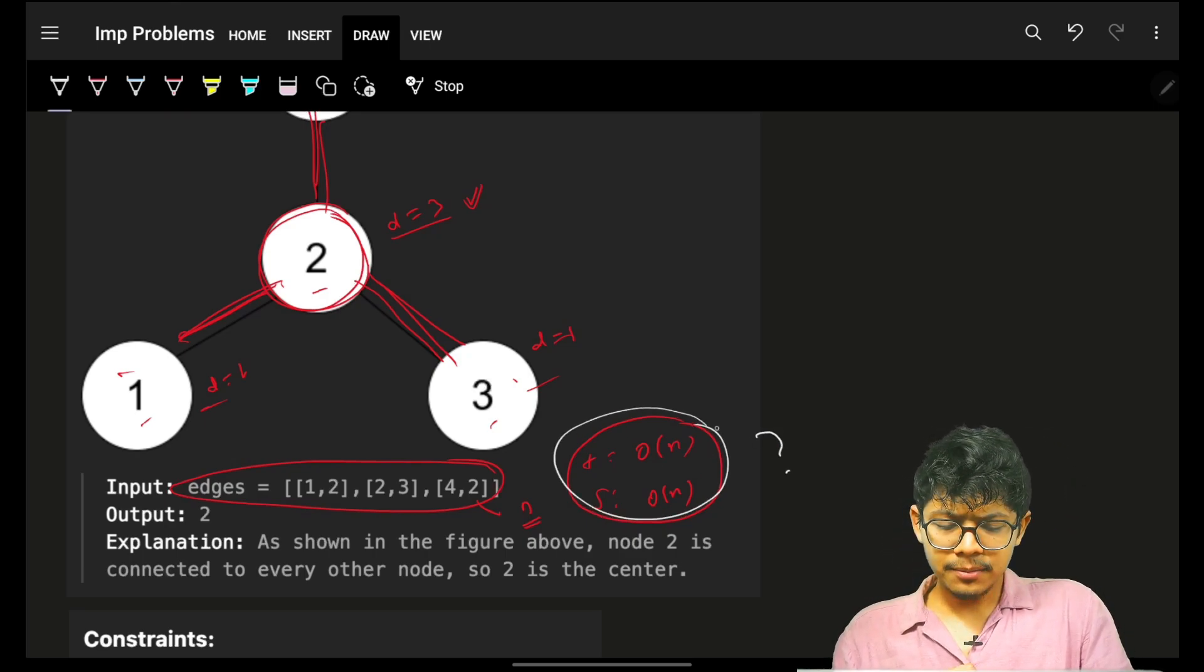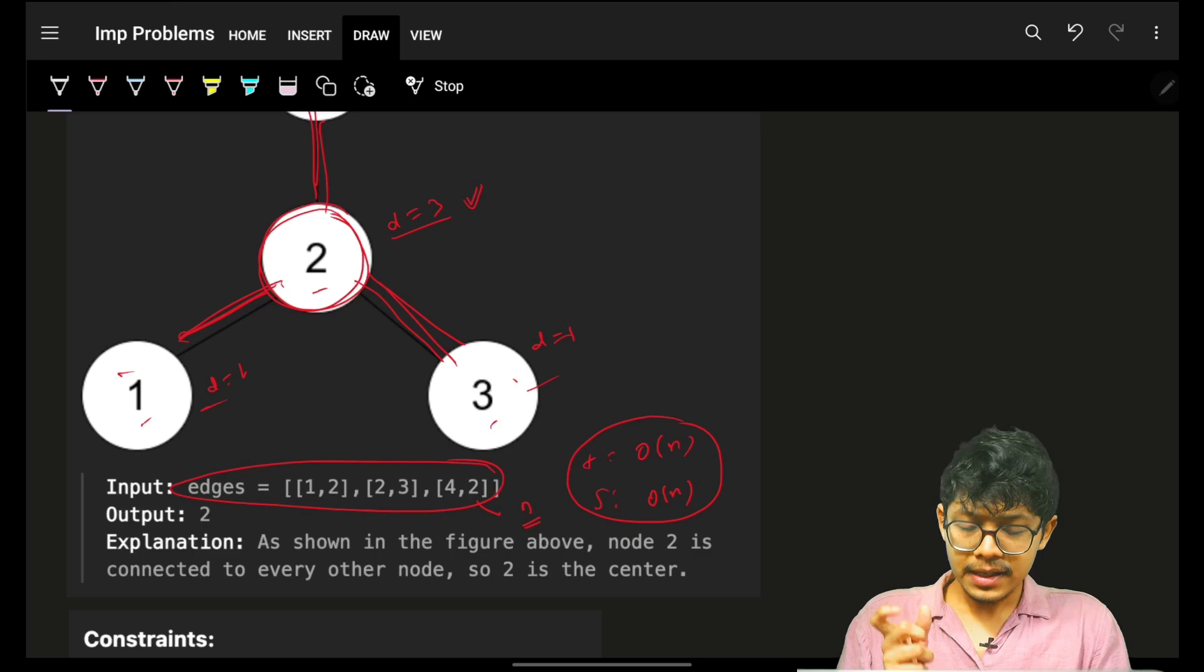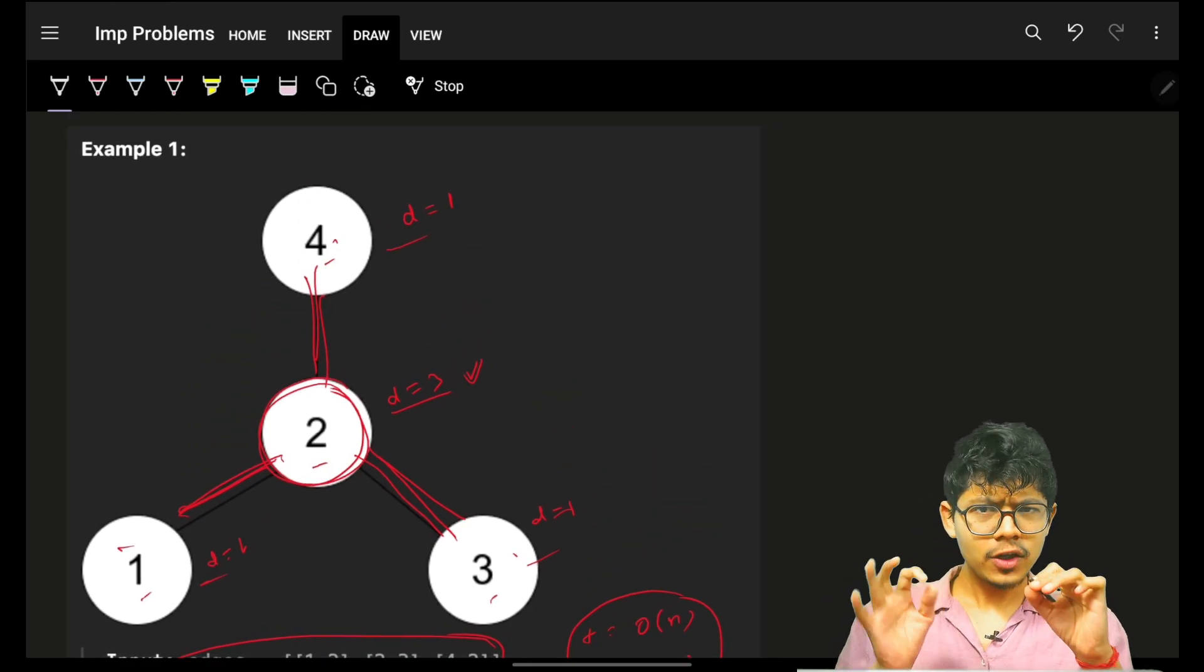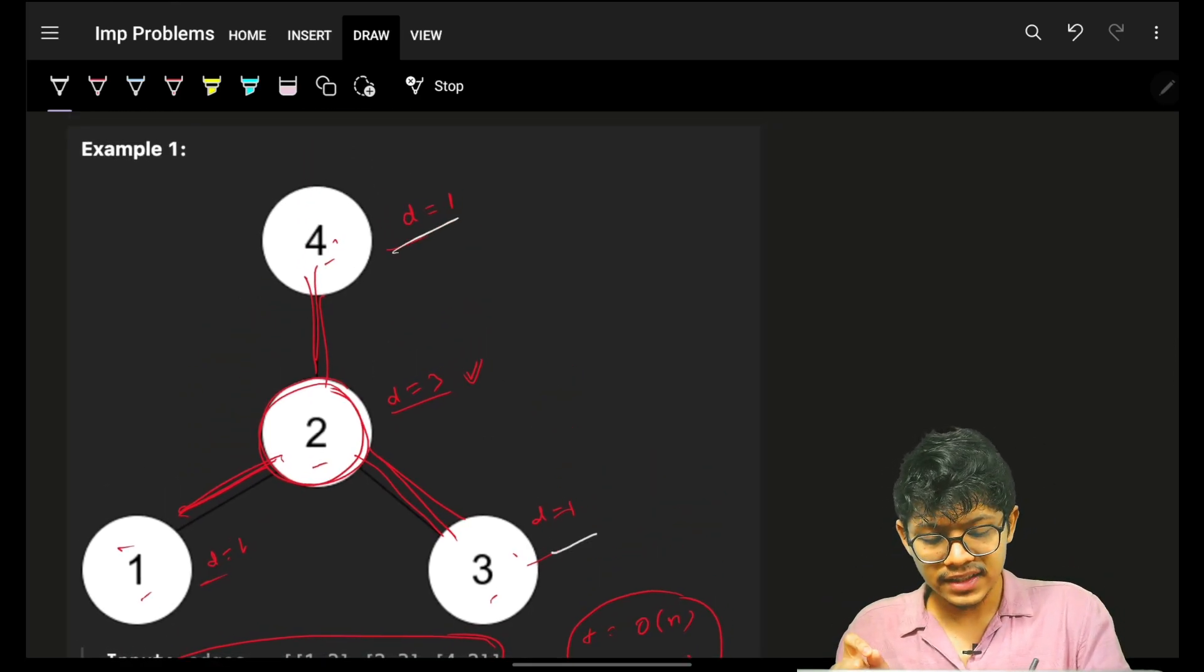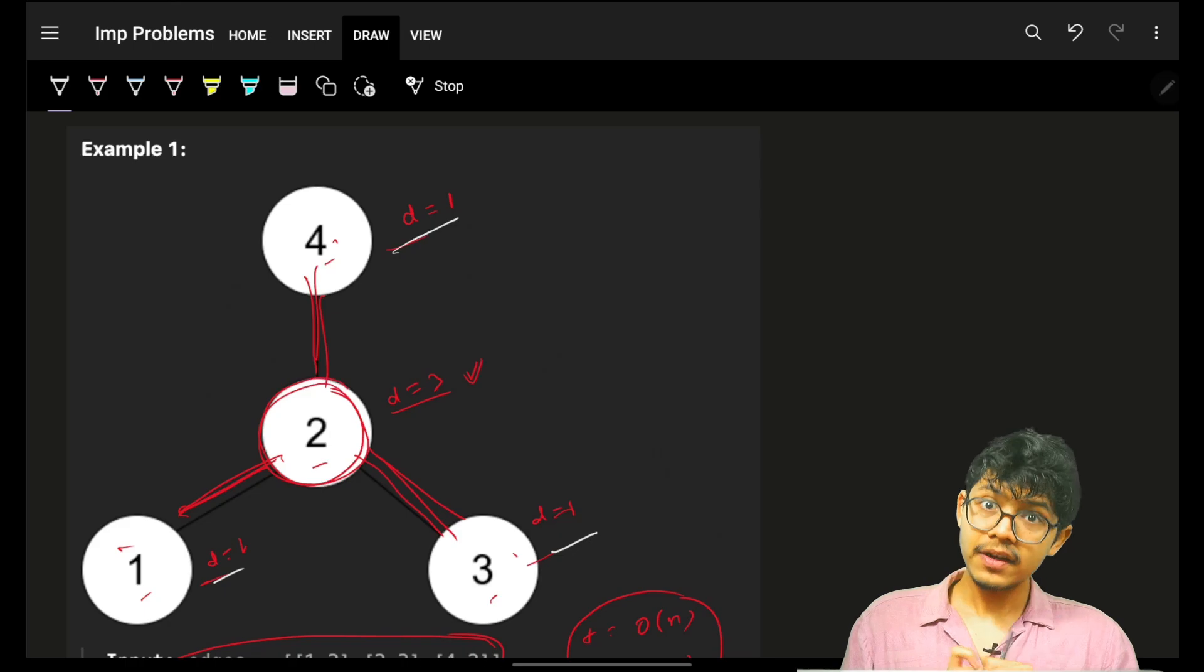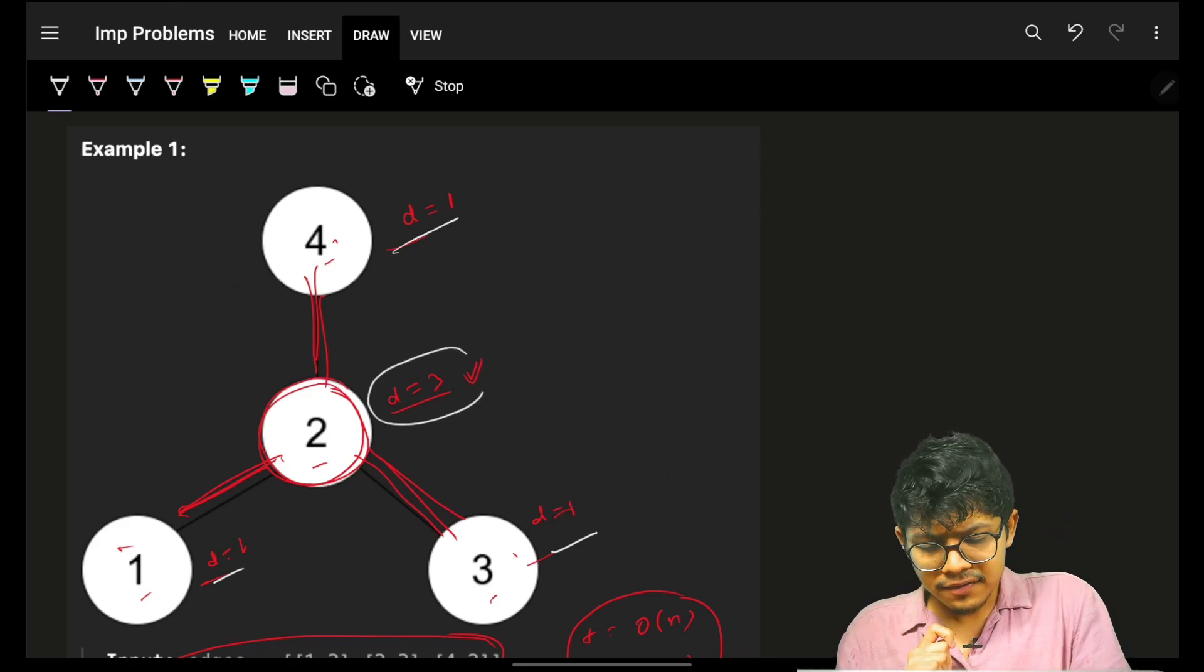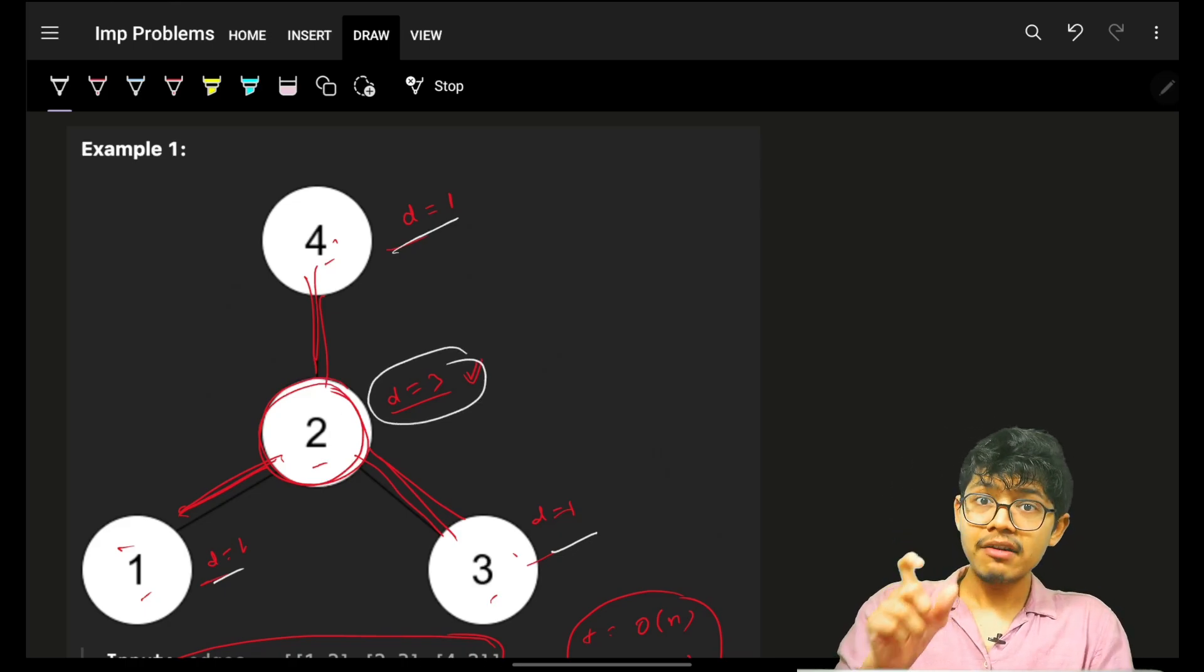Can we improvise it? It feels yes, why? Because we can see that it is very obvious that everyone else has a degree of one. Only the one in the center will have a degree of three or I can say n minus 1.